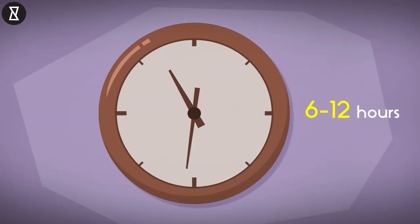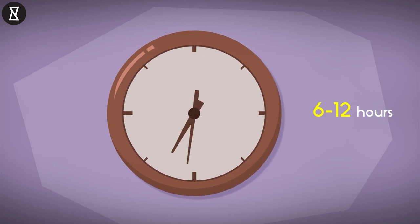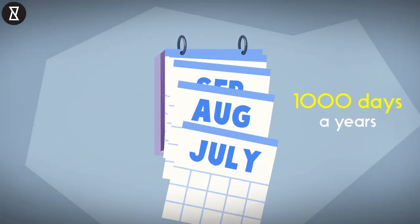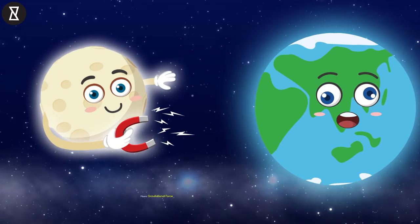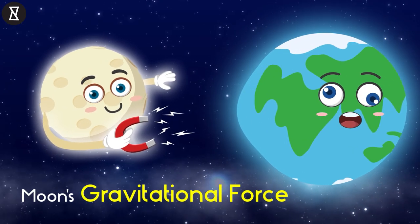Without the moon, a day on earth would just last six to twelve hours. There could be in excess of a thousand days in a single year. This is the result of the moon's gravitational force.